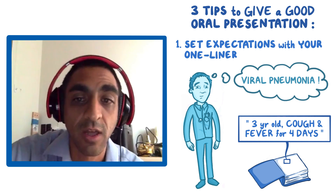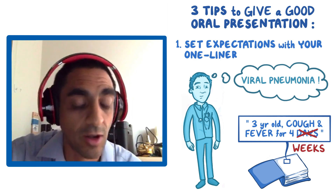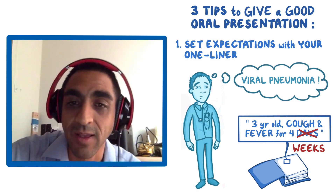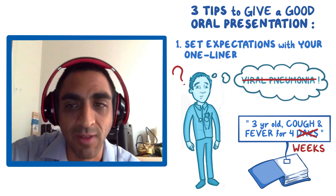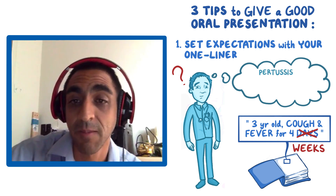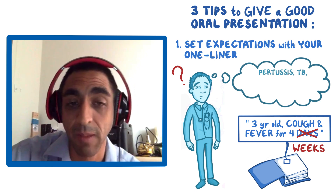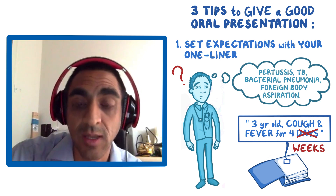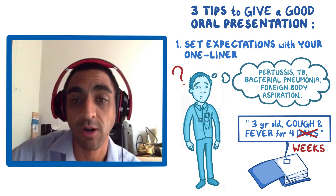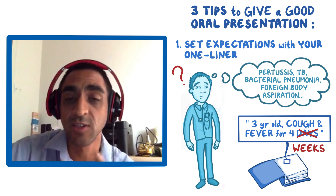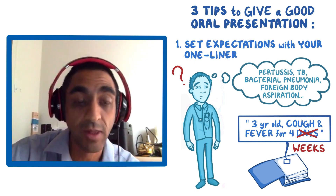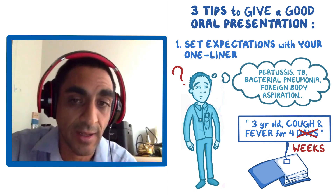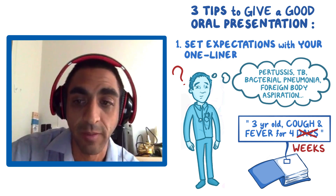What if I changed it to a three-year-old with cough and fever for four weeks? All I've changed is four days to four weeks. Now I'm thinking this is not a viral pneumonia. This is more likely to be pertussis, tuberculosis, a really bad bacterial pneumonia, or a foreign body aspiration — anything that would last much longer. Just changing four days to four weeks really dramatically changes what I'm thinking.